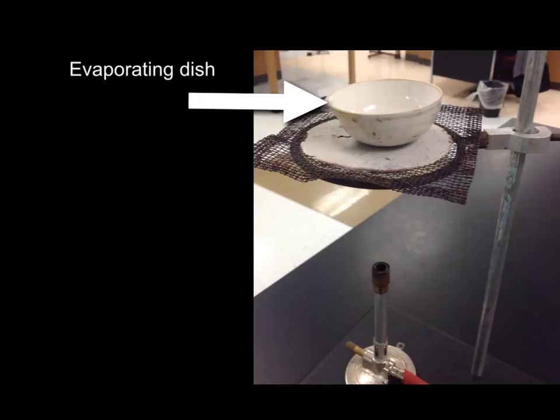One other thing that you could use over a Bunsen burner is an evaporating dish. And just like its name suggests, it's used to evaporate the water out of a solution so that you leave the solid that's dissolved in it behind. And its shape is very specific for that purpose. So you could suspend it over a Bunsen burner just like you would a beaker.